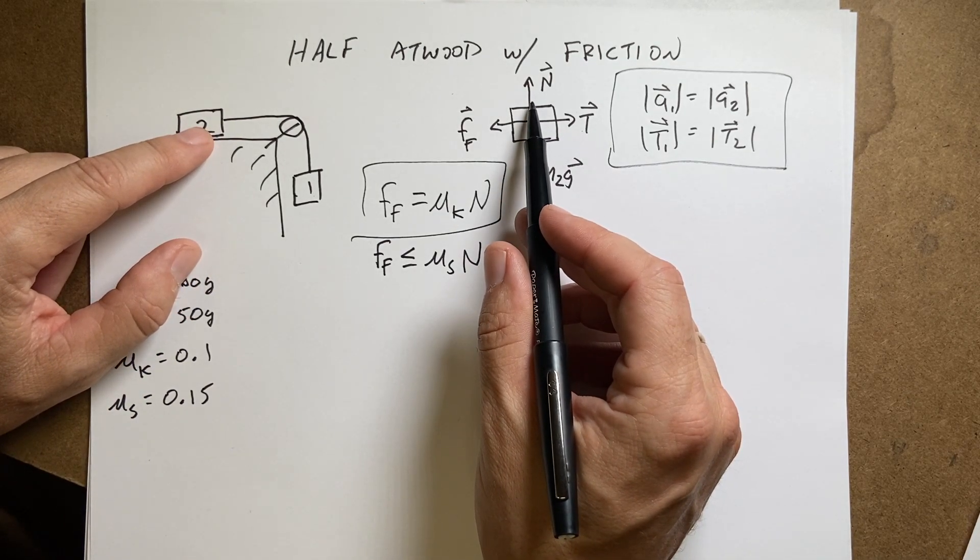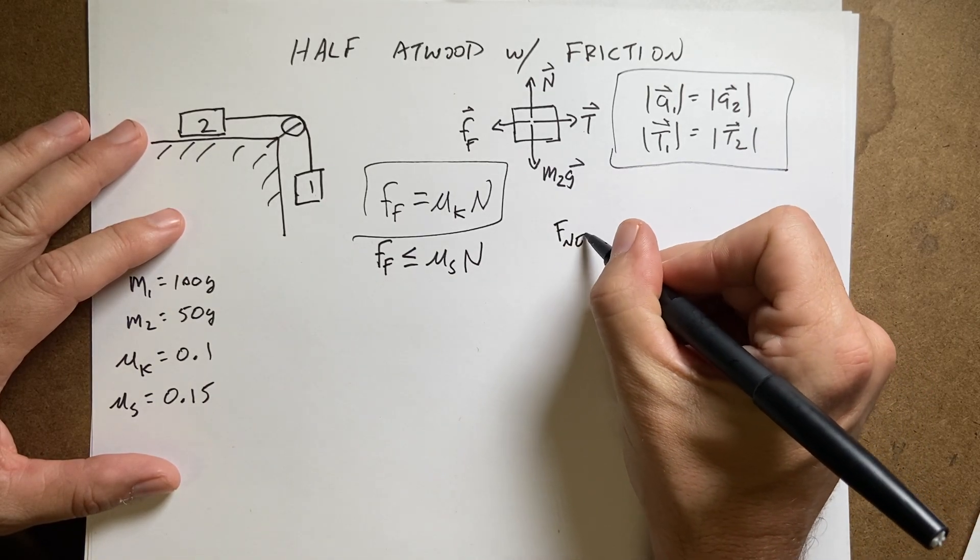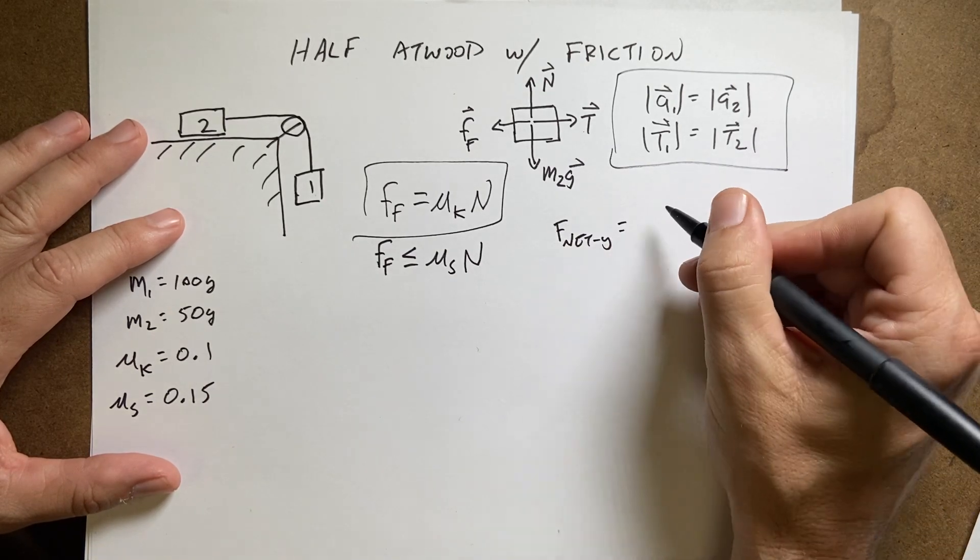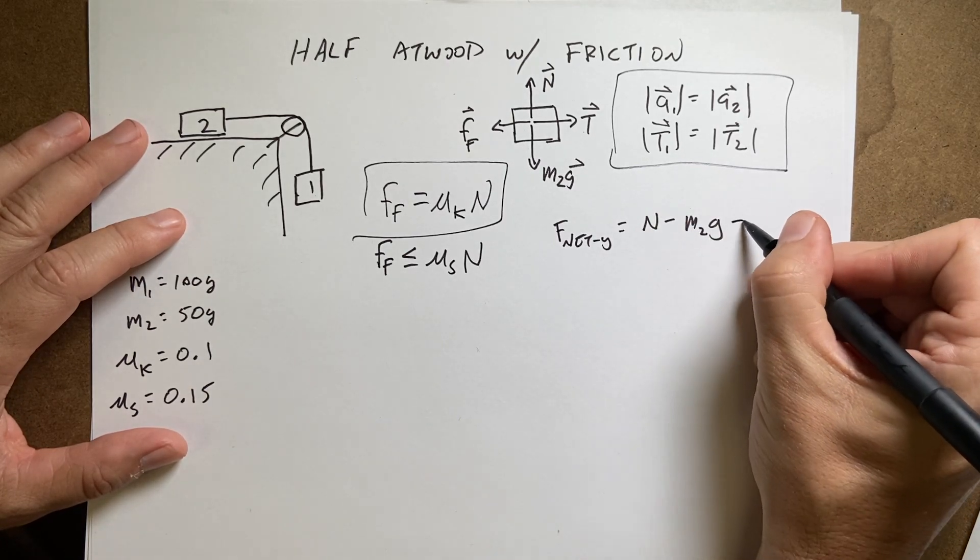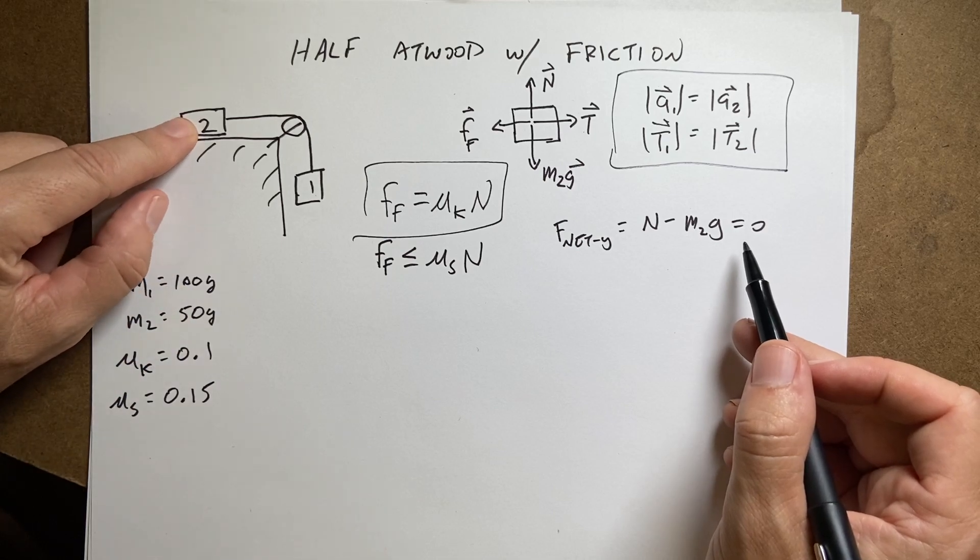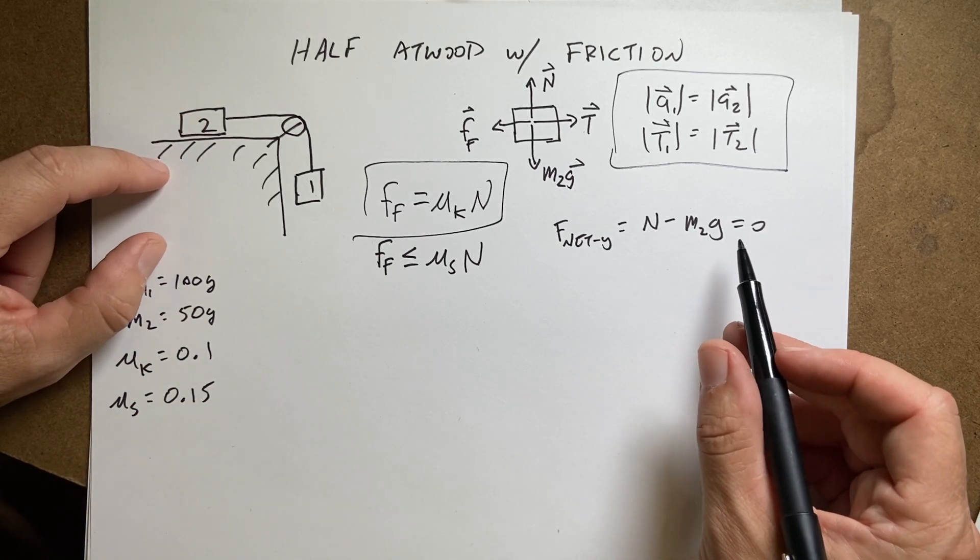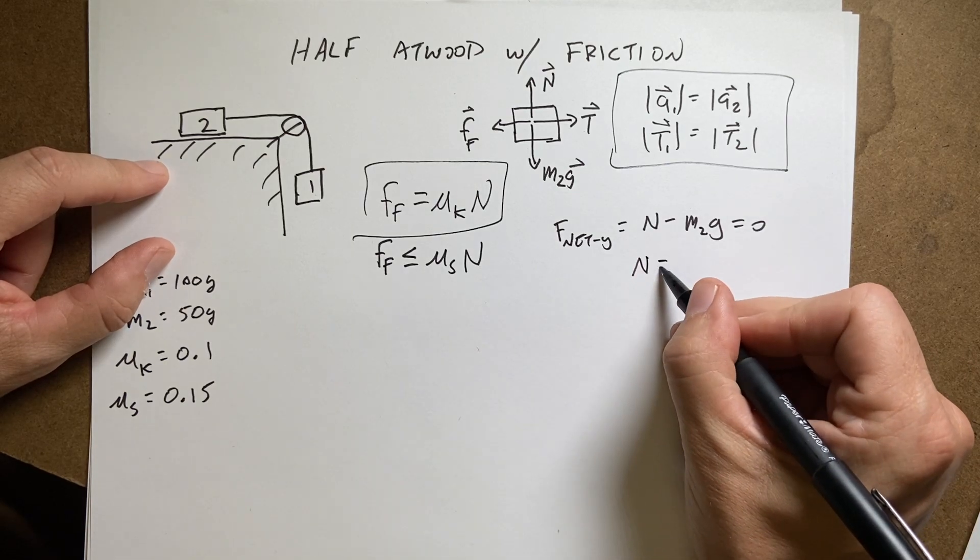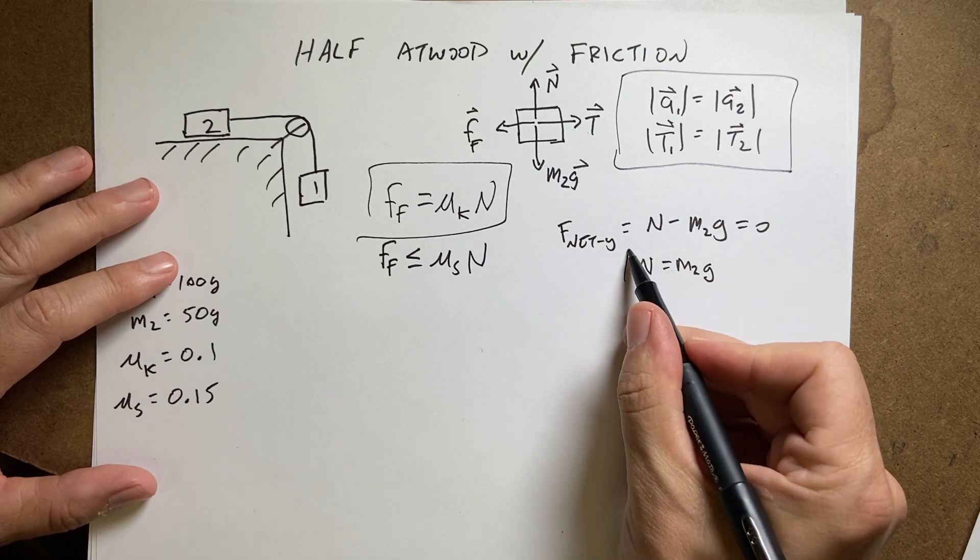If that's true, then the first thing I need to do is solve for the normal force. I'm going to look at block two and I say F_net_Y equals N minus M2G equals zero. It's equal to zero because this block does not accelerate in the Y direction if it stays on the plane. So that means that N equals M2G if I just add M2 to both sides.